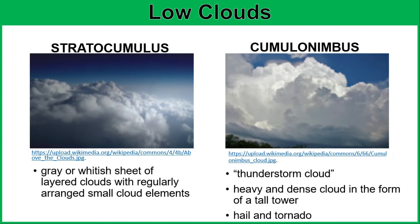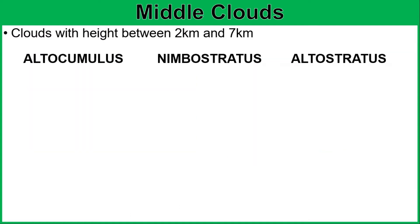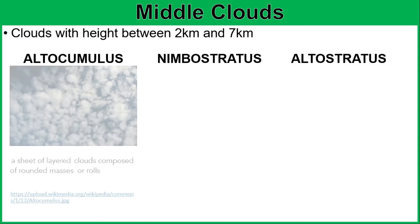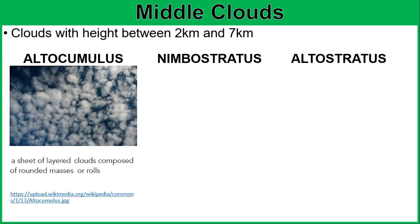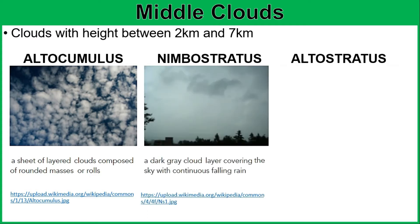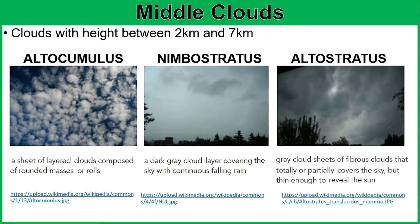The middle clouds have heights between 2 and 7 kilometers. We have three types: altocumulus, nimbostratus, and altostratus. Altocumulus clouds are described as a sheet of layered clouds composed of rounded masses or rolls. Next is nimbostratus, described as a gray cloud layer covering the sky with continuous falling rain. Followed by altostratus — a gray sheet of fibrous clouds that totally or partially covers the sky, but is thin enough to reveal the sun.